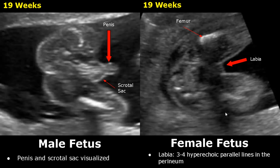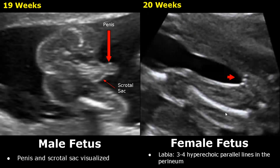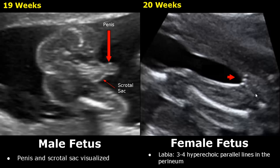This is an image of a female fetus of 20 weeks. We can see the labia — we can see three parallel lines. In this image they are not appearing as lines; they are somewhat appearing as dots, but it is still helpful in determining the gender.